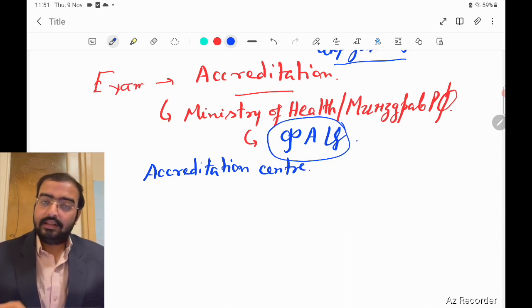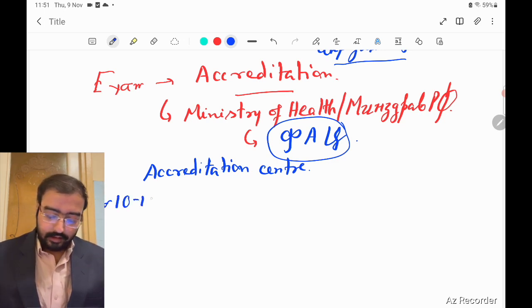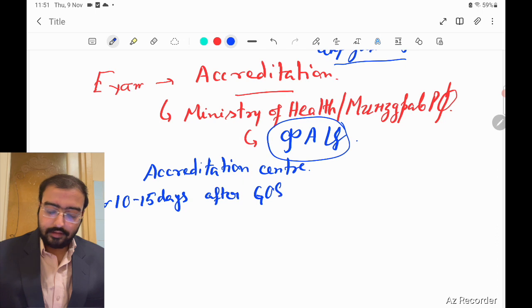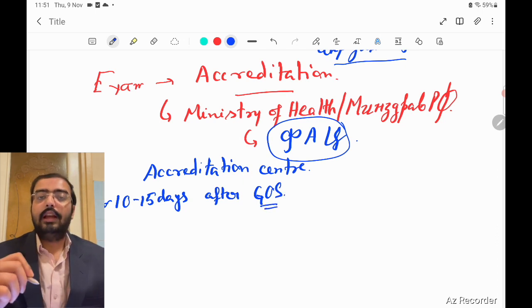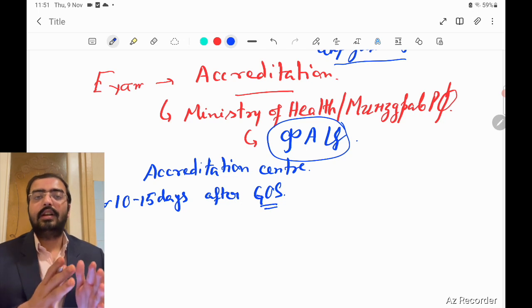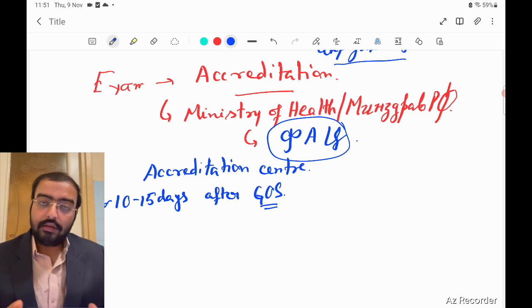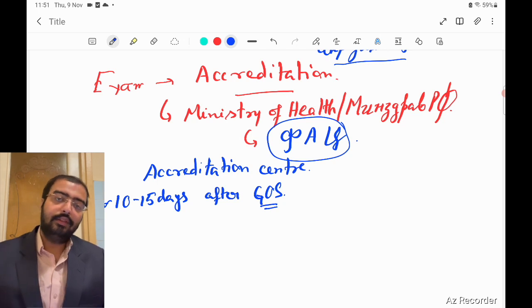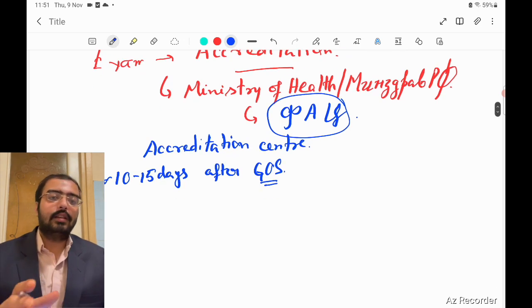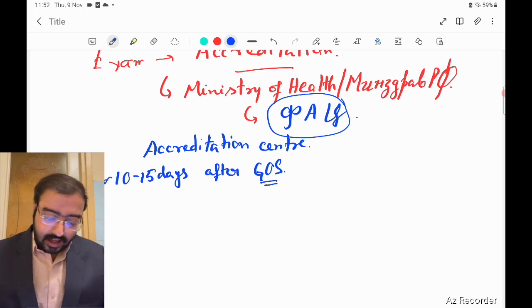In every university there is a center called the Accreditation Center. This exam is generally conducted every year approximately 10 to 15 days after GAUS. GAUS ensures your qualification - an exam for defending your qualification. After you get your qualification, you appear for Accreditatsiya. You have to apply for the exam beforehand, around a month before GAUS, just like you used to make application for NEET UG before passing 12th.